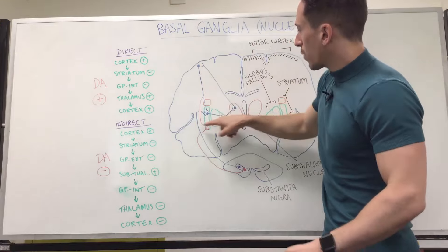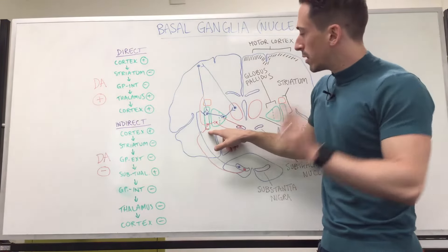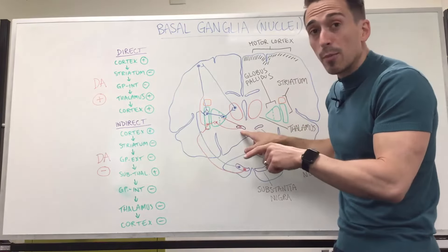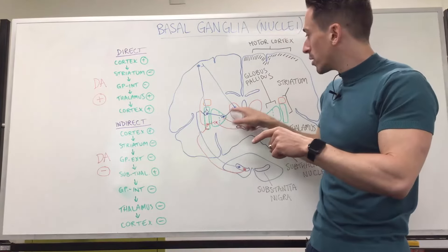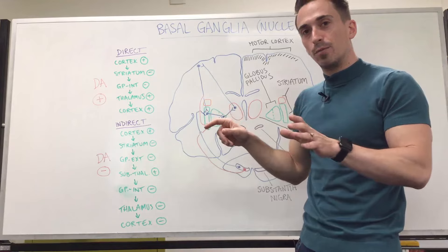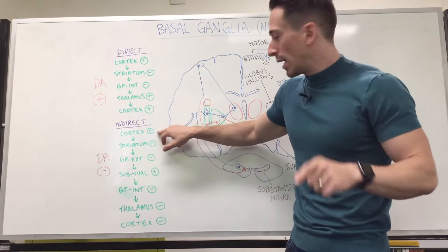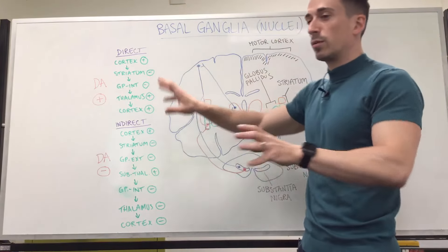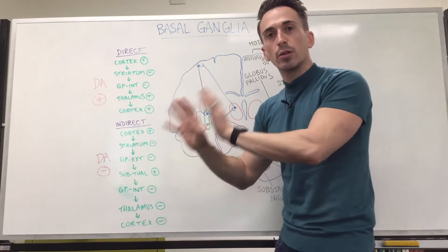There's also an indirect pathway, which goes from the motor cortex again to the striatum, then from the striatum to the globus pallidus externa, then to the subthalamic nuclei, and then back to the globus pallidus interna — this is an inhibitory signal. So the indirect pathway starts off with: can I move my legs? And the outcome is: no, you cannot. So you've got the direct pathway saying go, go, go and the indirect pathway saying stop, stop, stop.